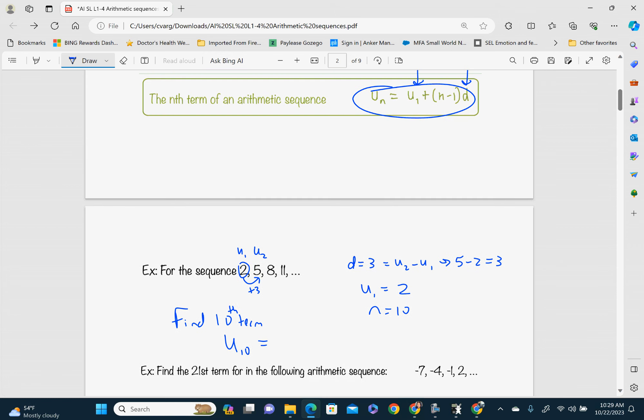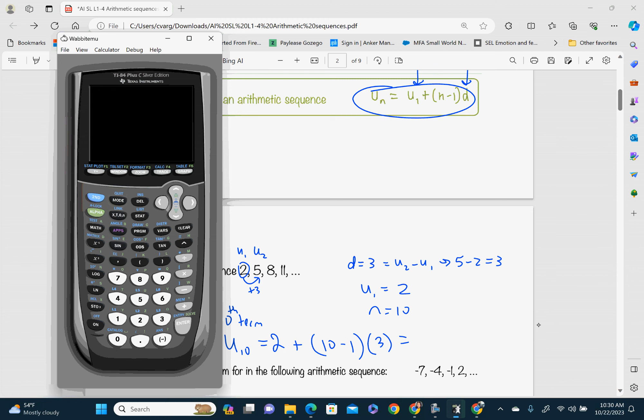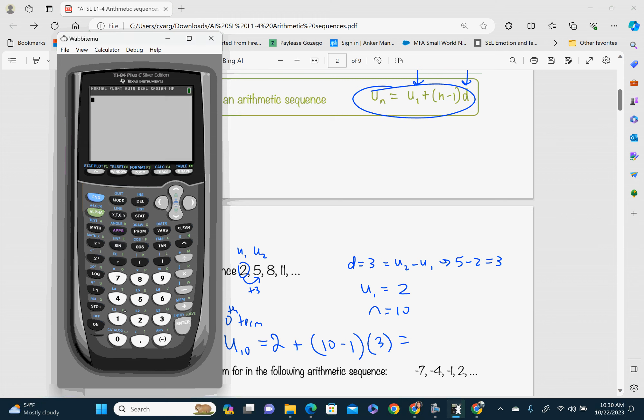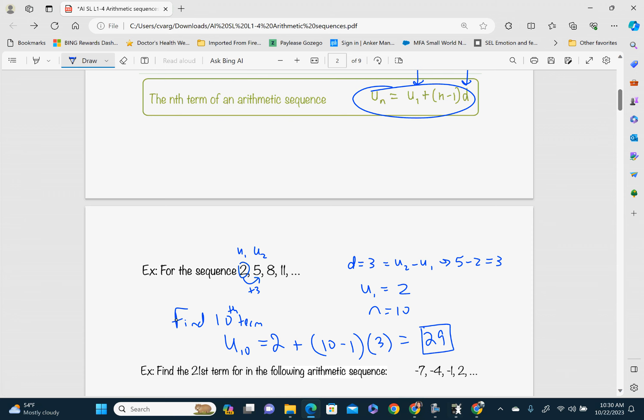And I'm going to go ahead and plug it into this formula that I have right here. So U10 is equal to U1, so U1 is 2, then I have a plus sign, parentheses. Our N is 10. So I'm plugging in 10 minus 1. It's always minus 1. And then I'm going to multiply it by my common difference, which we found out from the beginning is 3. And this whole thing gets plugged into the calculator. So I have 2 plus parentheses, 10 minus 1 times 3. Hit enter. And I get that my 10th term is 29.